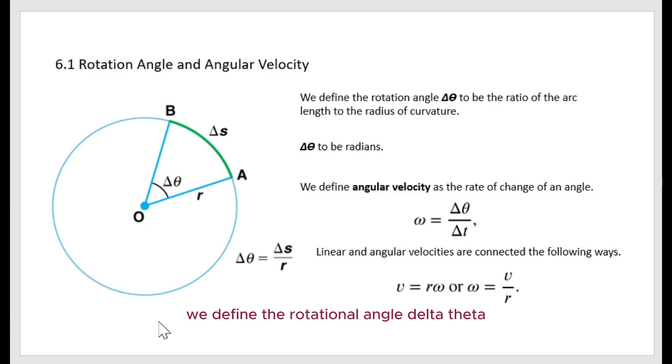We define the rotational angle delta theta to be the ratio of the arc length to the radius of curvature. The unit of delta theta is in radians.